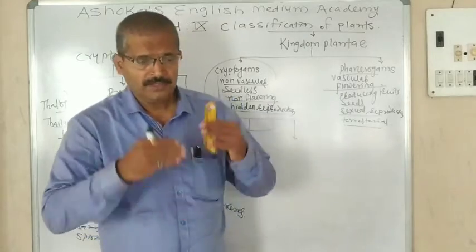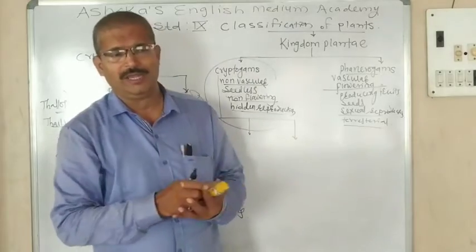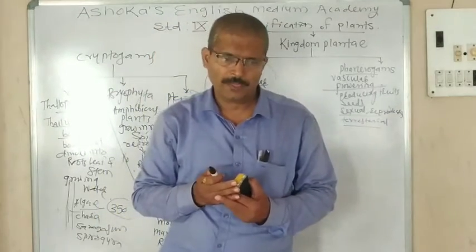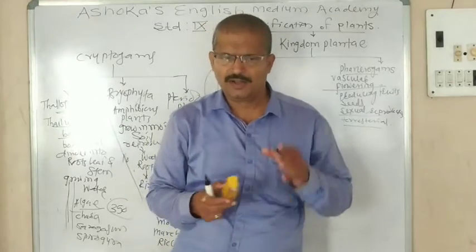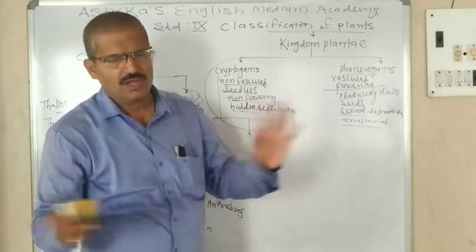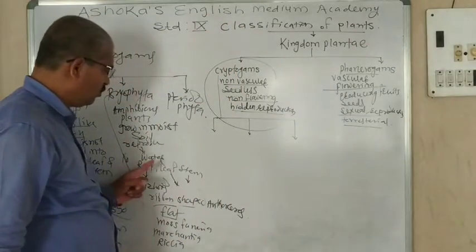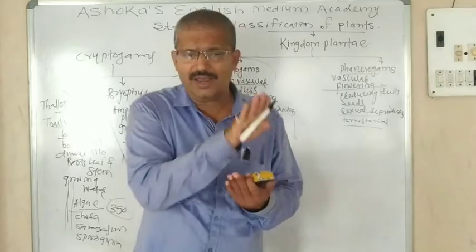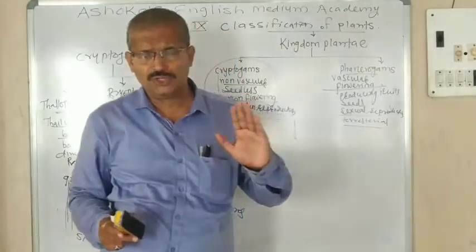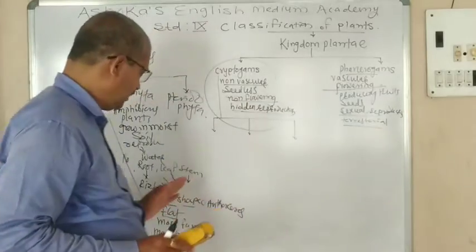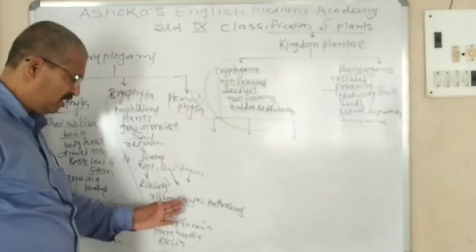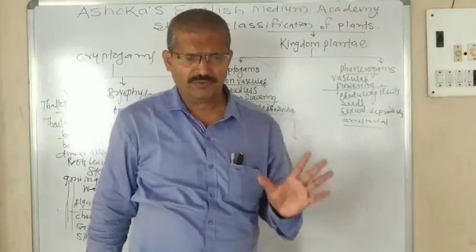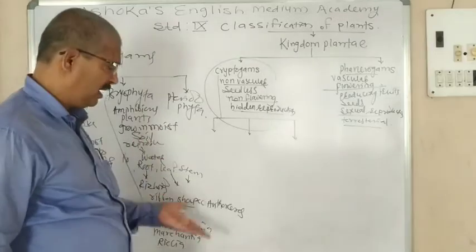Bryophyta are amphibious plants growing in moist soil, even on wet walls — wherever there is moisture, these plants can grow. But for reproduction they need water. Their body is not differentiated into true root, leaf, and stem, but root-like, leaf-like, and stem-like structures are found. Their body structure is ribbon-like or slab-like. Examples are moss (Funaria), Marchantia, Riccia, and Anthoceros.